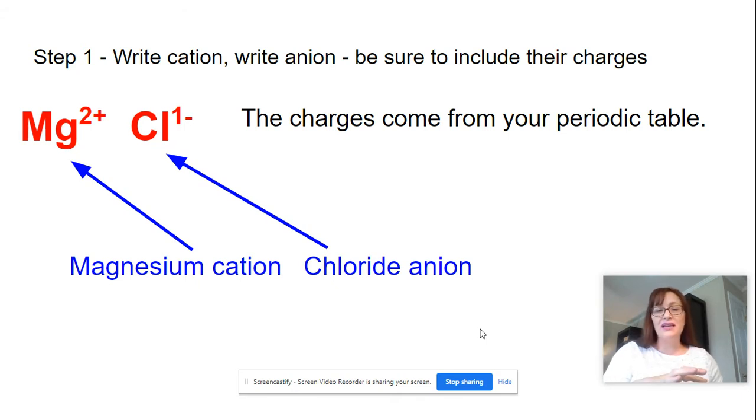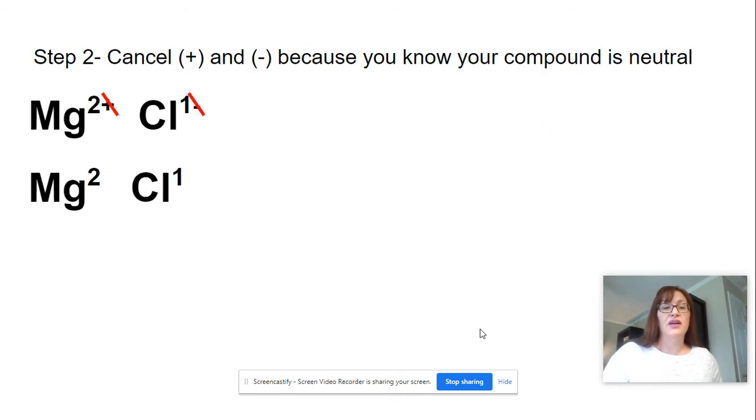So I've written my magnesium ion, I've written my chloride ion. And by the way, when you write the negative ion chlorine, the ending changes to i-d-e. So it's not chlorine, it's chloride.